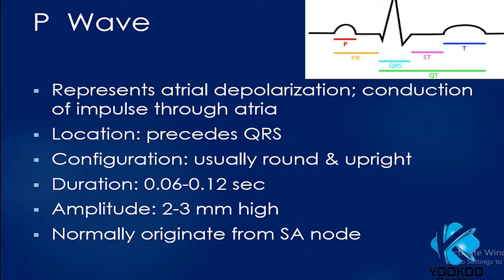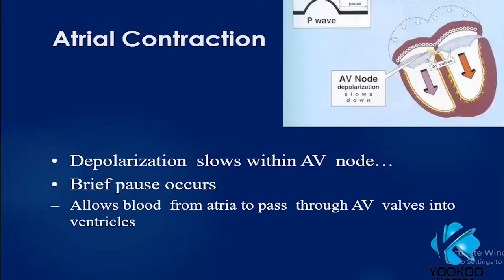The P wave is the first positive deflection — usually positive — and represents atrial depolarization, which is conduction of the impulse through the atria. It normally precedes the QRS, is usually rounded and upright, has a duration of 0.06 to 0.12 seconds, and an amplitude of 2 to 3 millimeters in height. Above that is considered abnormal. It normally originates from the sinoatrial node during atrial contraction.